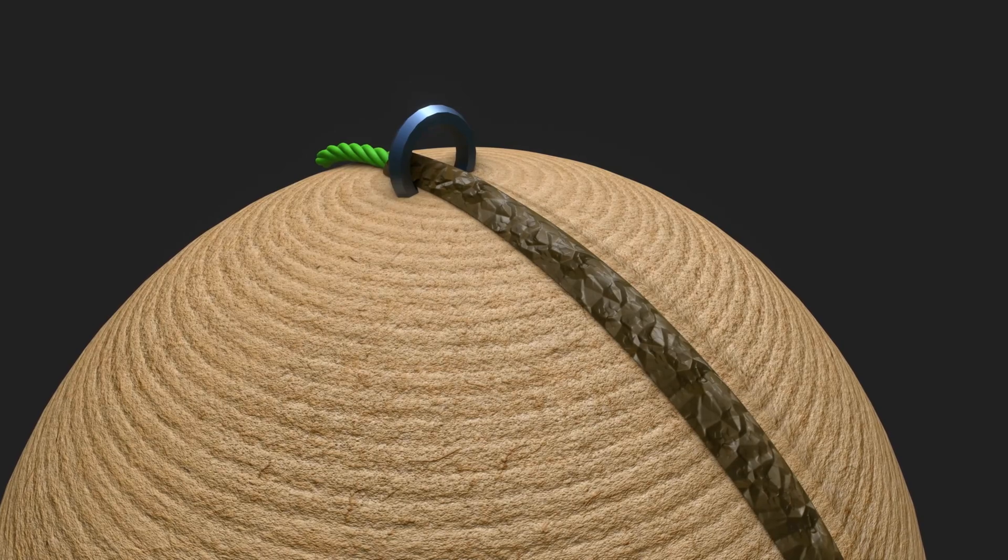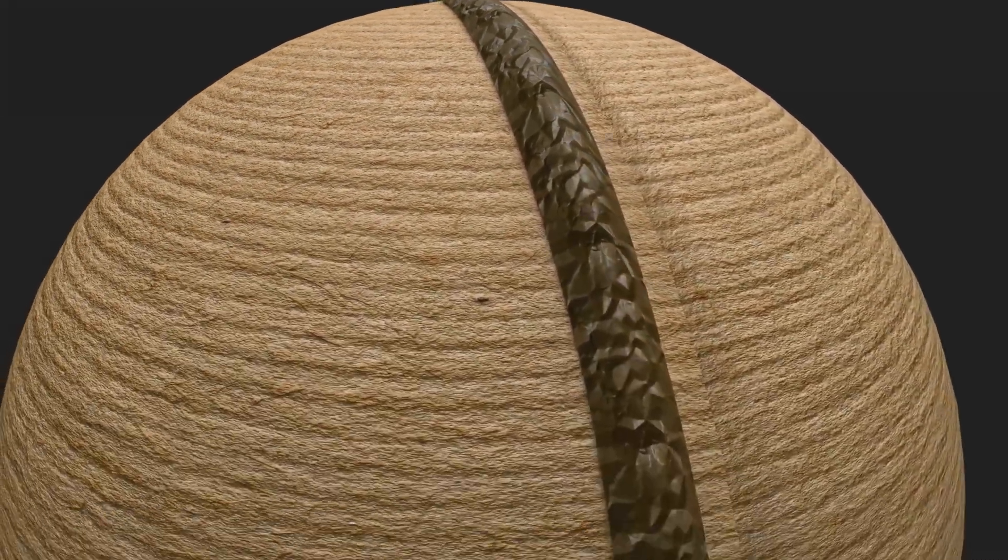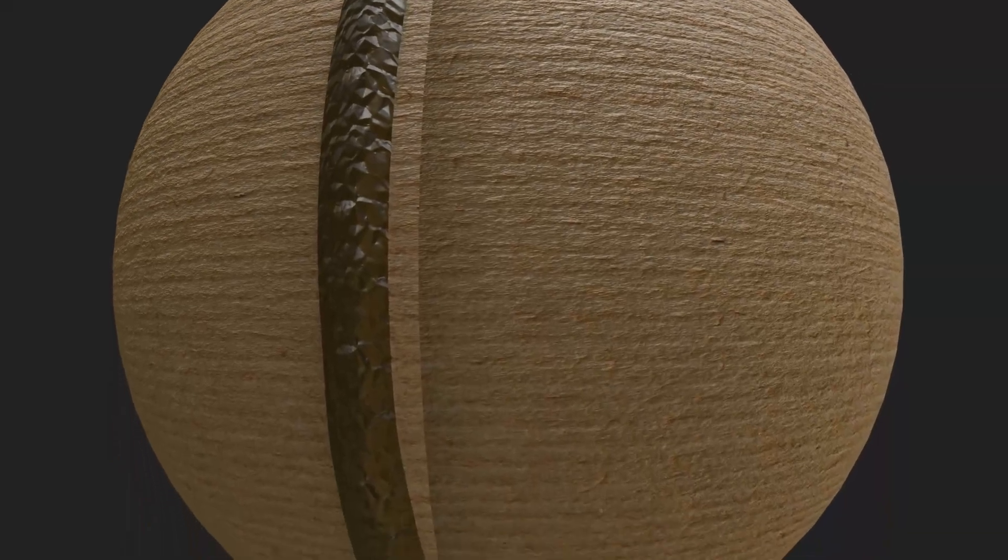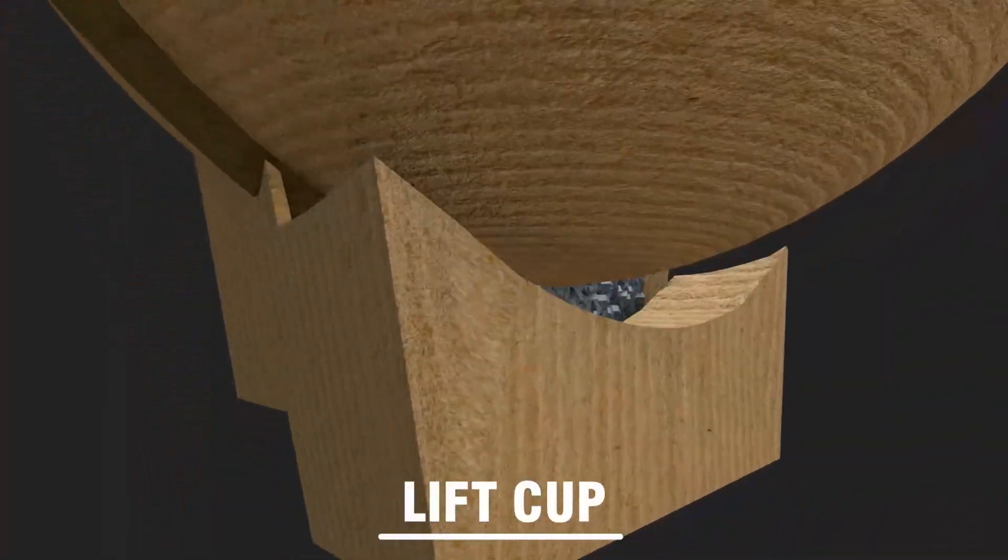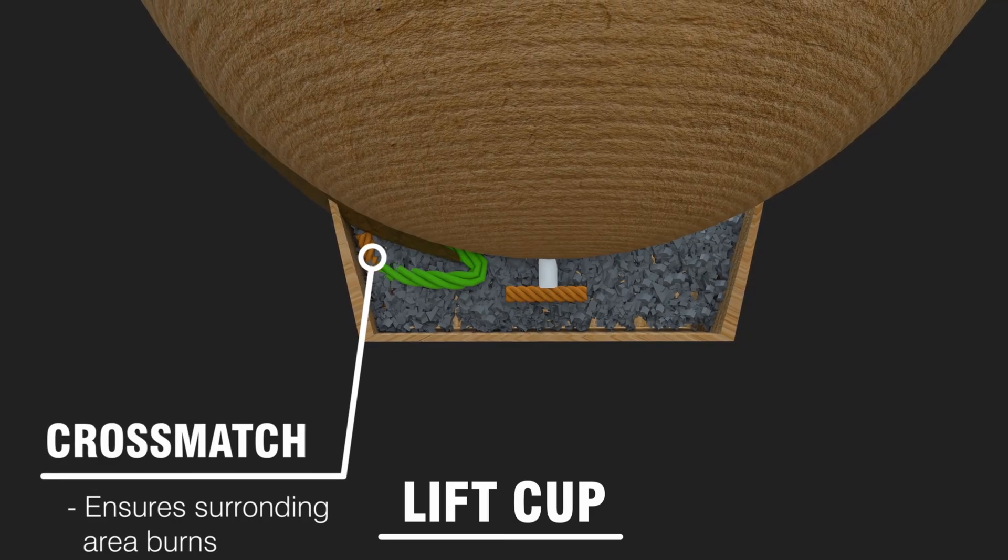Starting the firework is as simple as lighting the quick match fuse. The lit fuse runs along the length of the shell until it reaches the lift cup. Cross match surrounds the end of the fuse to ensure a successful burn.